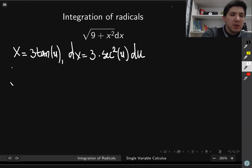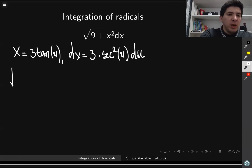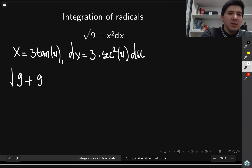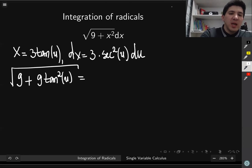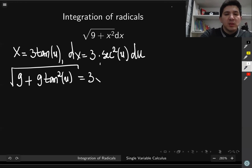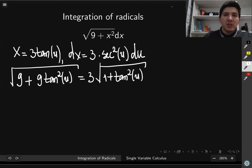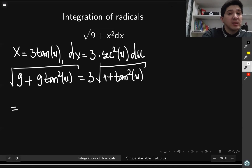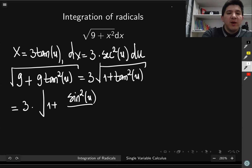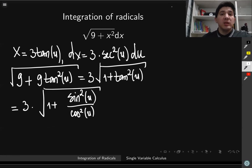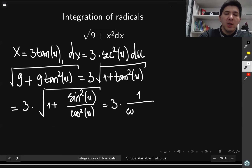We need to check whether we can get rid of the square root. The square root of 9 plus x squared becomes the square root of 9 plus 9 times tangent squared of u. Taking 9 out of the square root gives 3, leaving the square root of 1 plus tangent squared of u. Writing tangent squared as sine squared over cosine squared and taking a common denominator gives cosine squared plus sine squared in the numerator, which equals 1. Taking the square root leaves simply 3 times 1 over cosine of u.